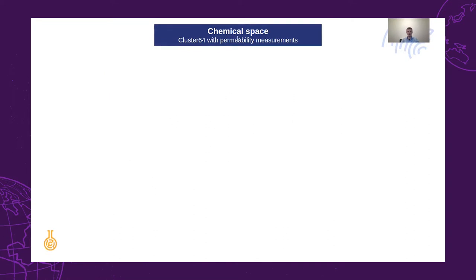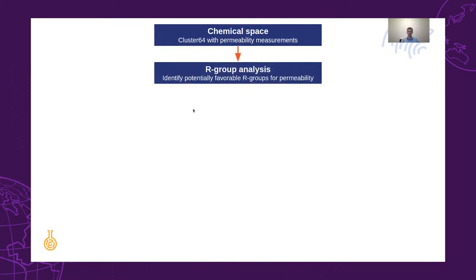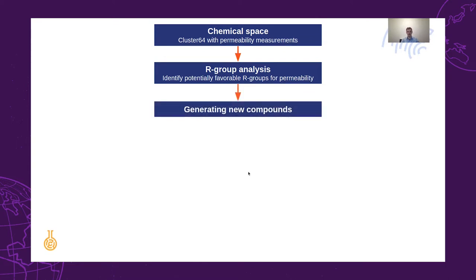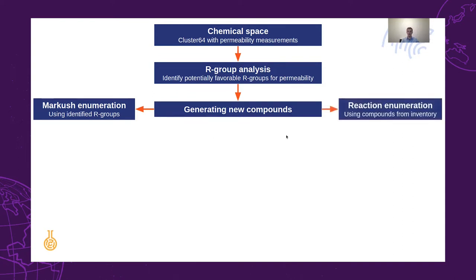After defining a chemical space, we will do an R-group analysis to identify potentially favorable R-groups for permeability. Then we will generate new compounds in two ways: one, using a Markush enumeration using the identified R-groups from the R-group analysis, and two, we will also do a reaction enumeration using compounds from inventory.